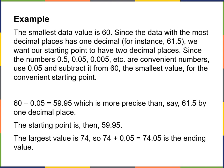The smallest value is 60. Since the data with the most decimal places has one decimal — for example, 61.5 — we want our starting point to have two decimal places. Since 0.05 is a convenient number, use 0.05 and subtract it from 60, the smallest value, for the convenient starting point. So this is your starting point: 59.95, which is more precise than 61.5 by one decimal place.